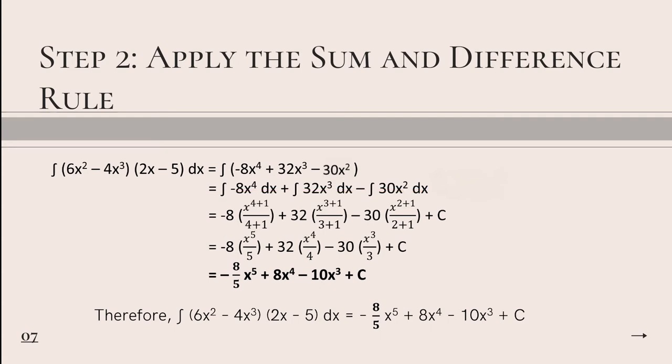Since this is integration, we are going to apply the reverse power rule, in which we will add 1 to each exponent and do the same for the denominator. As we can see, negative 8x raised to the power of 4, we add 1 to its exponent, which is 4, and did the same to the denominator. We copied 4 as the exponent and added 1. Same goes to the next terms.